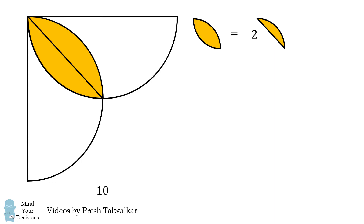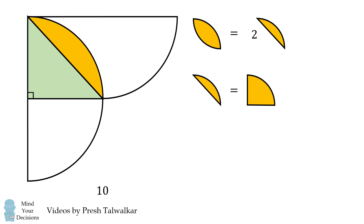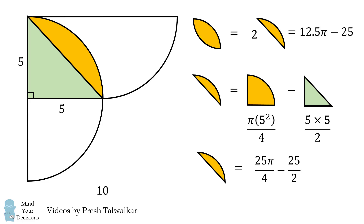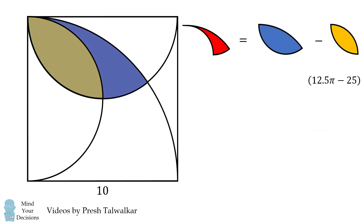To find the area of one circular segment, we draw in this isosceles right triangle. The circular segment equals this quarter circle minus the area of this triangle. Since the radius of the semicircle is 5, the area of the quarter circle is pi times 5 squared over 4, and the area of the triangle is 5 times 5 over 2. So the area of this circular segment equals 25 pi over 4 minus 25 over 2. The area of the yellow shape will equal 2 times this, which equals 12.5 pi minus 25.